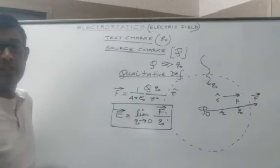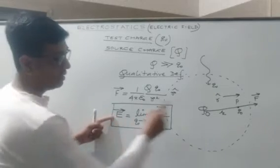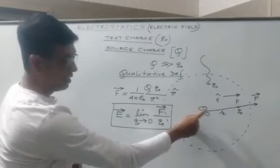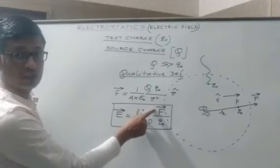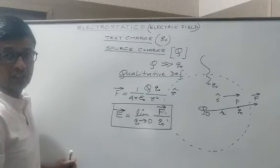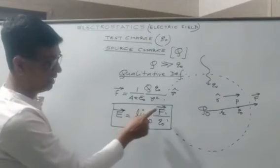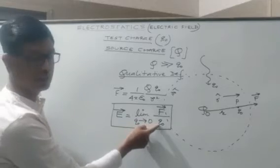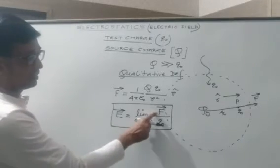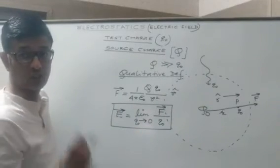This is how the electric field can be measured at a point. Electric field at a point due to the source charge is defined as the electric force experienced per unit test charge placed at that point. Obviously, electric field is a vector quantity — whatever direction the force has, the electric field is also along that same direction.